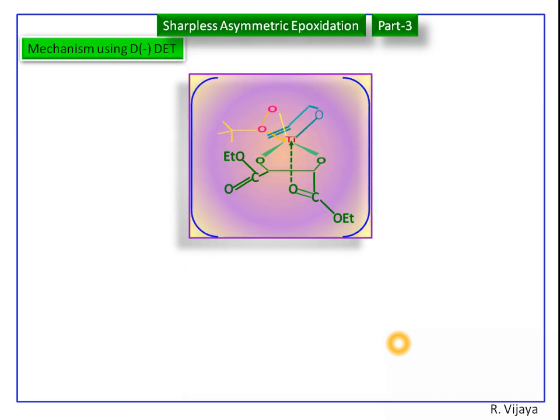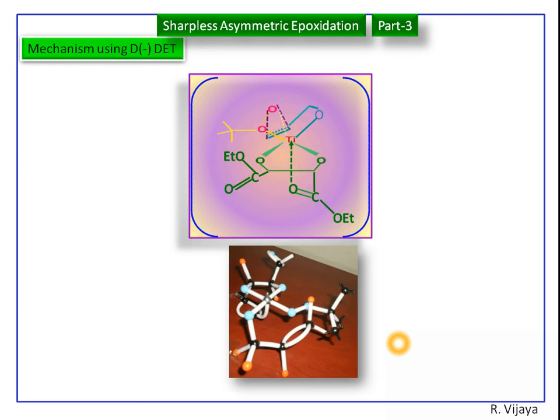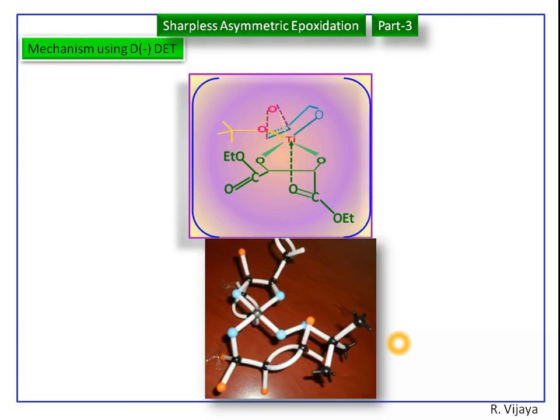Now the oxygen is ready to transfer to the alkene bond. This model also confirms this. This is the top side view of this complex. Here the oxygen is at the top, alkene is at the bottom. So the oxygen can transfer to the alkene bond to form the epoxide.